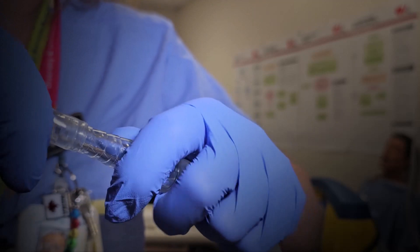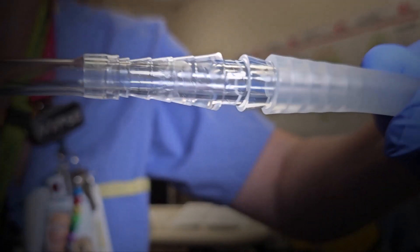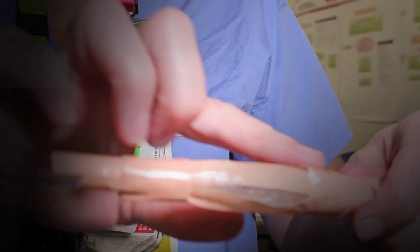Next, using aseptic technique, you're going to want to make sure that the chest tube connection is as tight as possible, and then you're going to want to further secure that tube using waterproof tape.